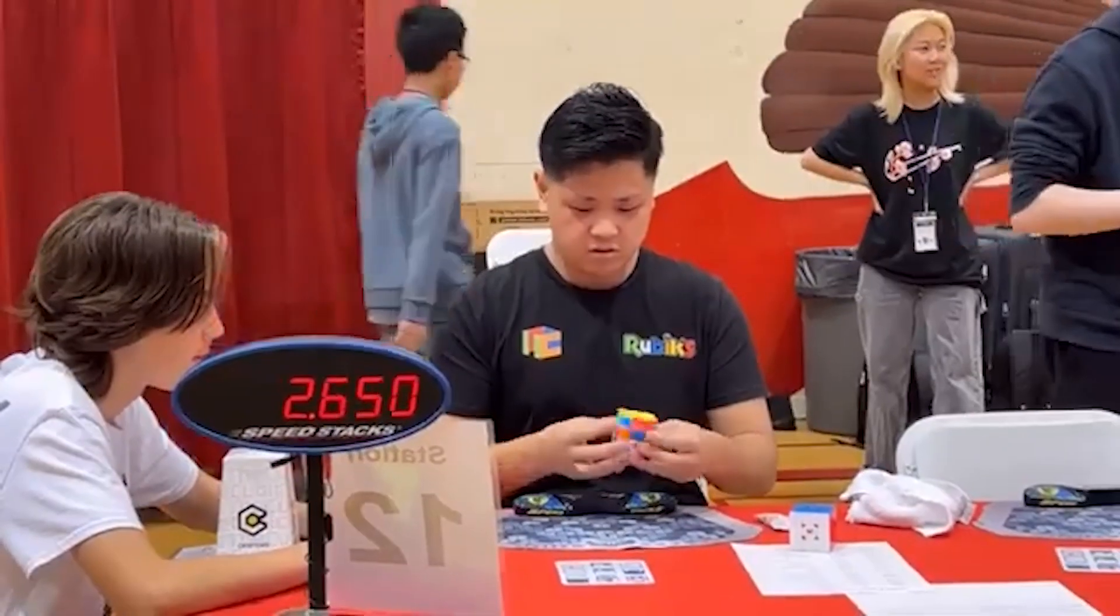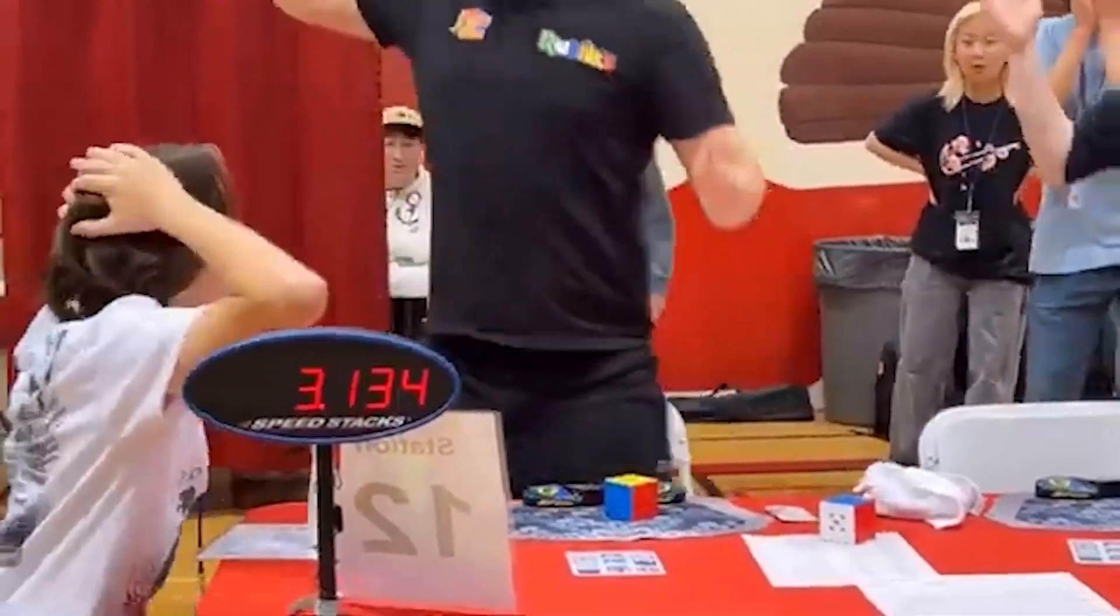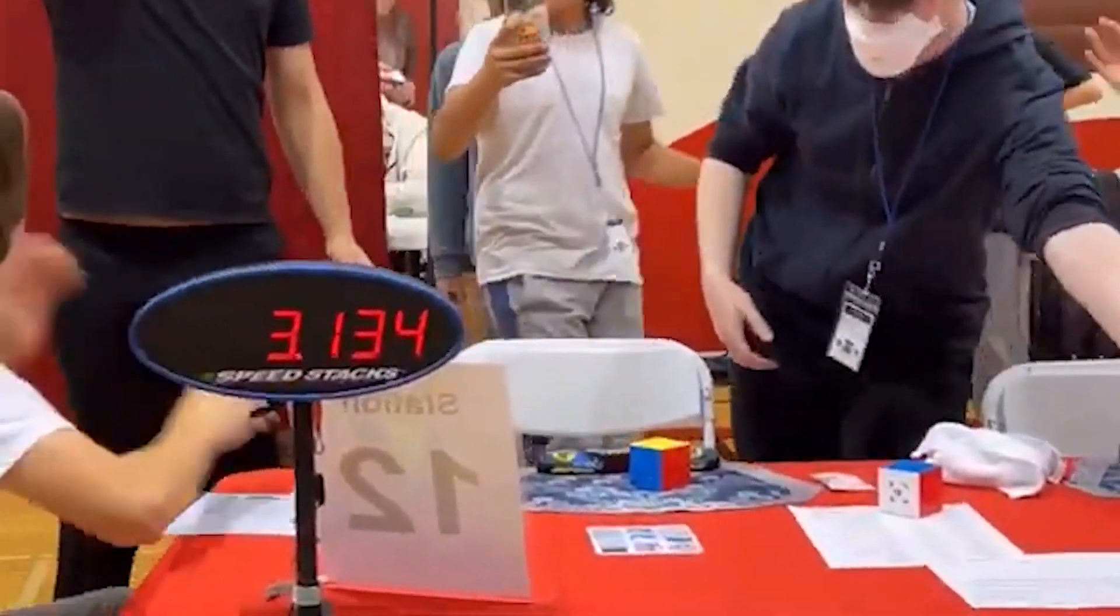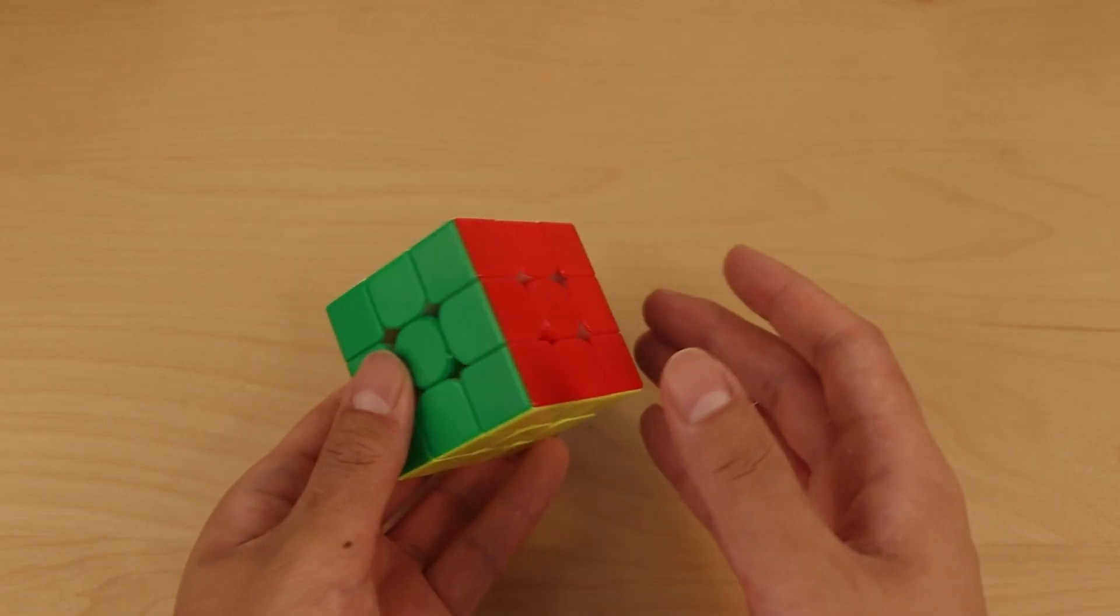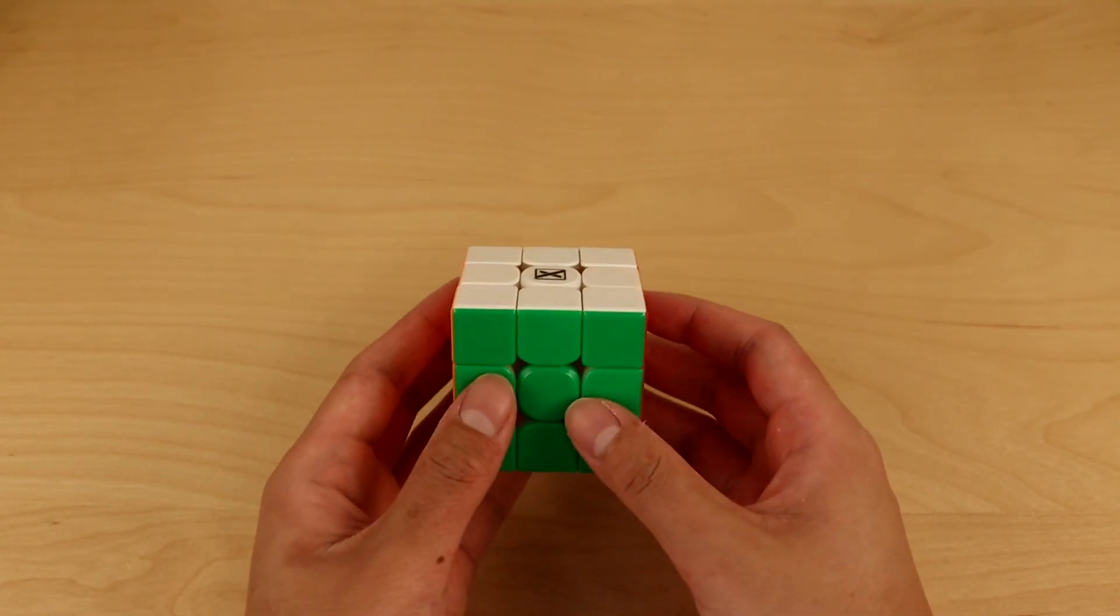Max Park just got the 3x3 world record single with a time of 3.13, breaking Yucheng Du's record from five years ago. His solution for this solve is just beautiful, so I just had to share the solution with you guys.